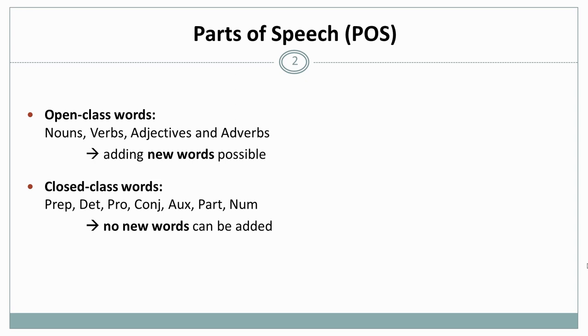Then there are closed-class words, which are all part of speech classes that are not nouns, verbs, adjectives, or adverbs. So for example, prepositions, determinants, pronouns, conjunctions, auxiliaries, and so on. And in these classes, you cannot add new words. That's why they are called closed-class words.